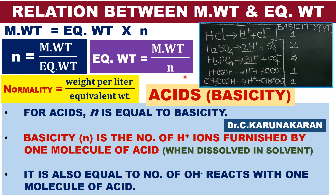For bases, N is equal to acidity. For salts, N is the charge carried by the ion. For example, the equivalent weight of barium ion equals its atomic mass divided by 2, because barium is Ba2+, so the charge carried by the barium ion is 2.